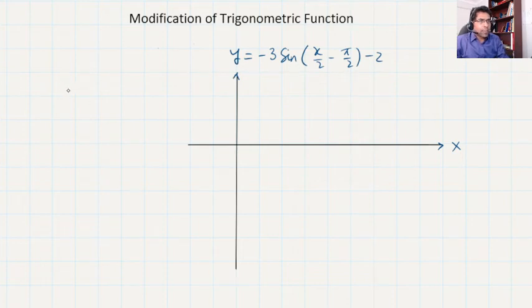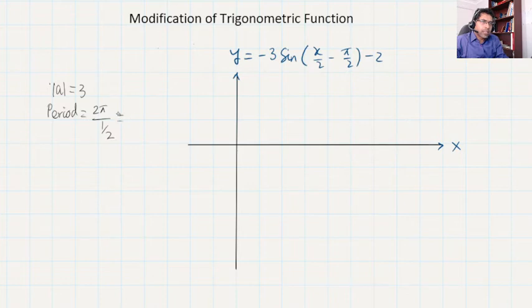We have amplitude here, and amplitude is always written in terms of positive, so it is always positive, which is 3. And what is our period here? The period is 2π over B, and in that case B is 1/2. If I just do that calculation, it should be 4π.